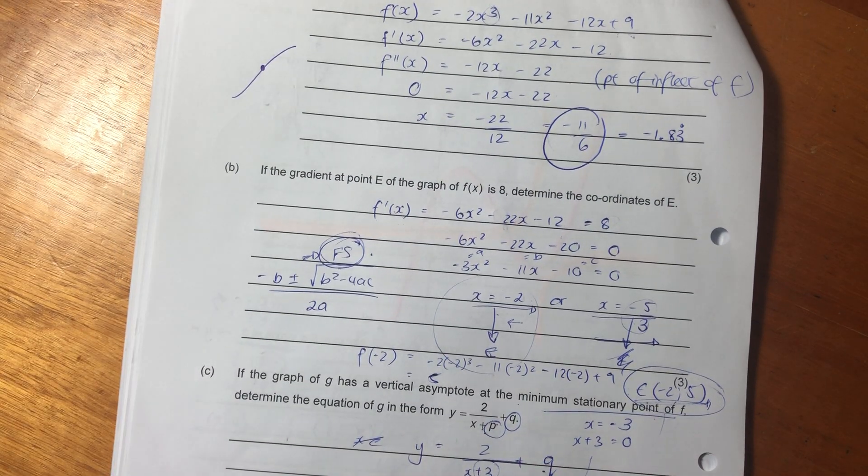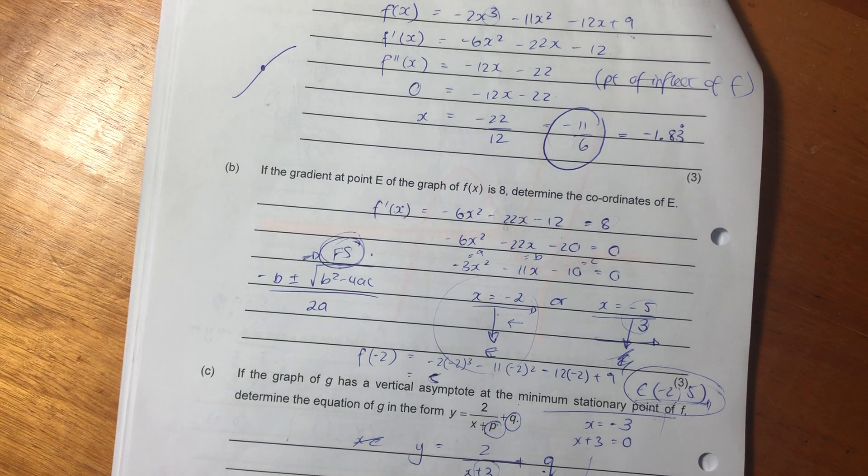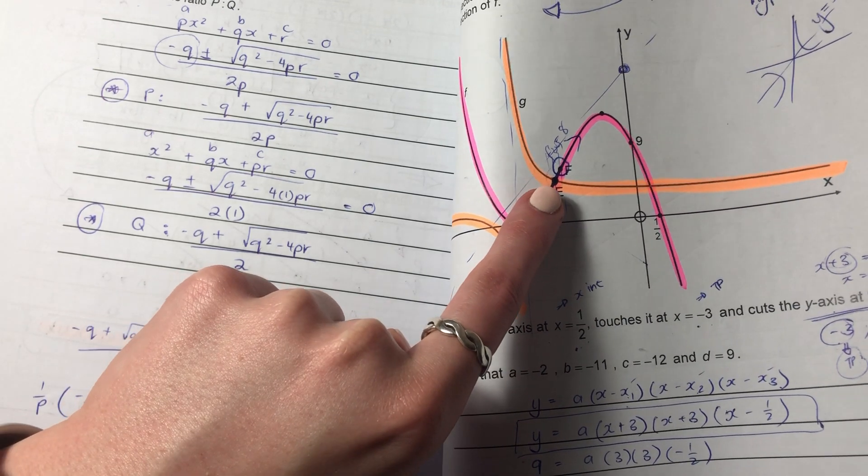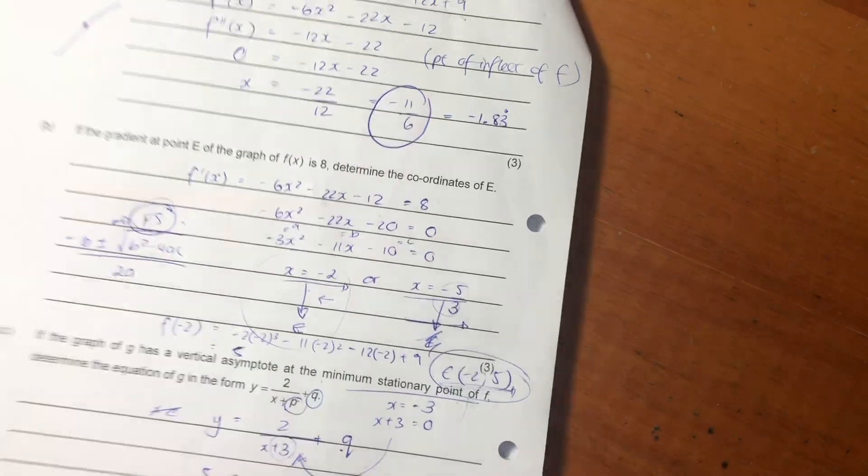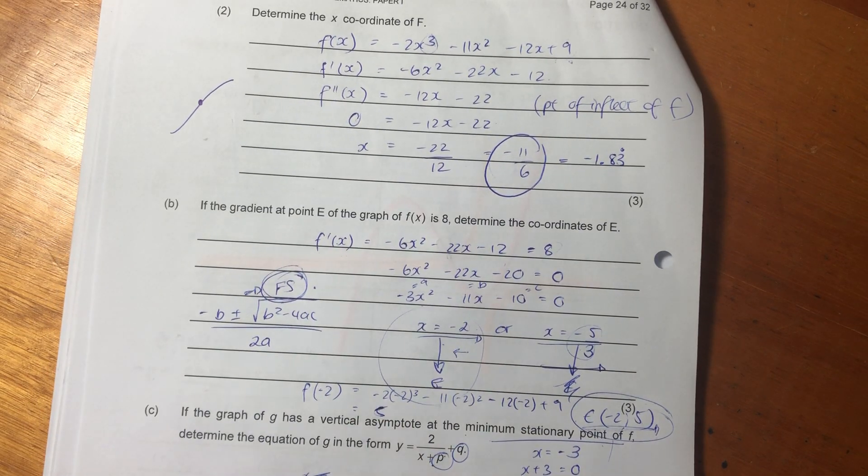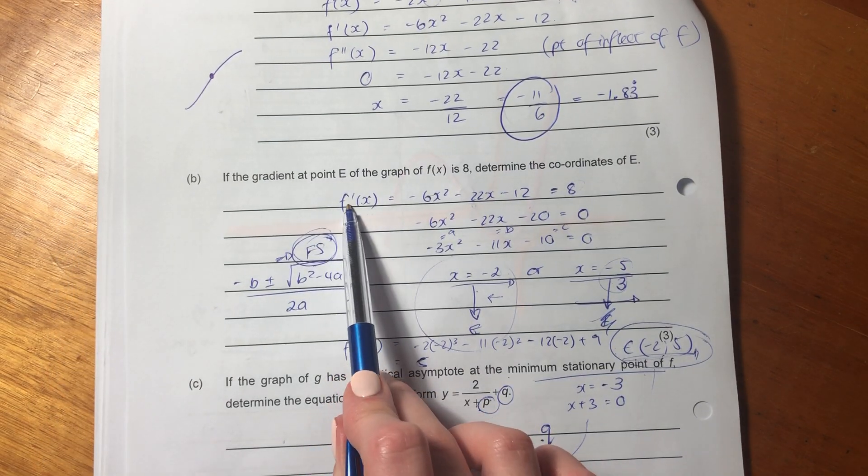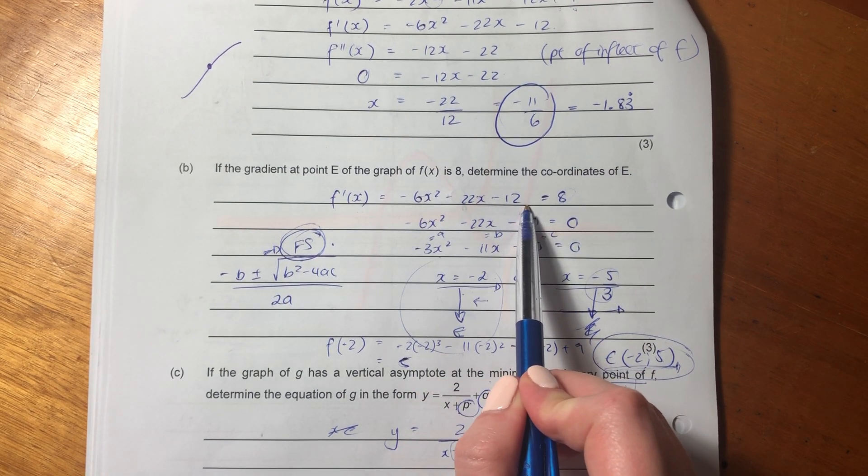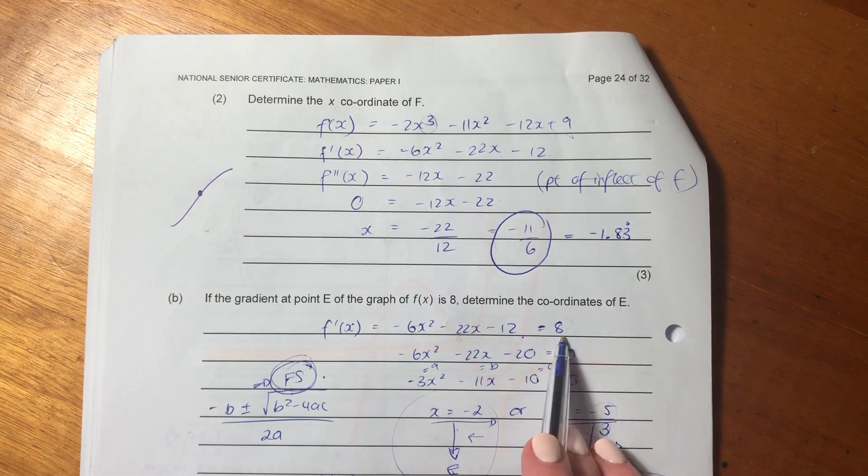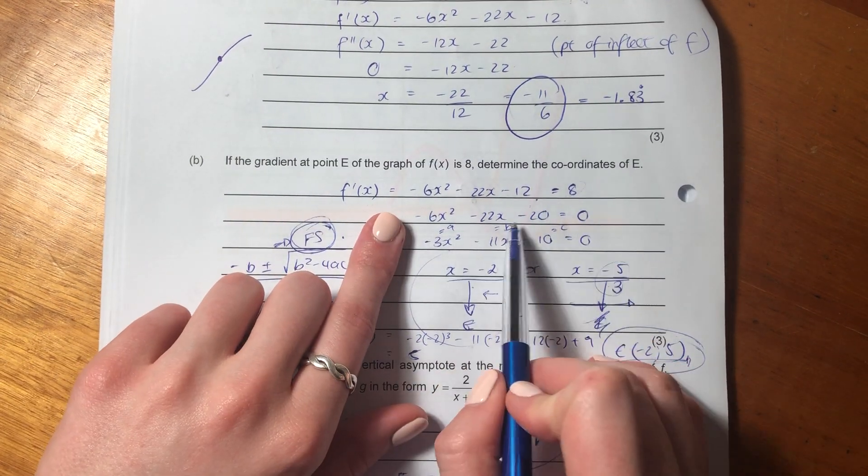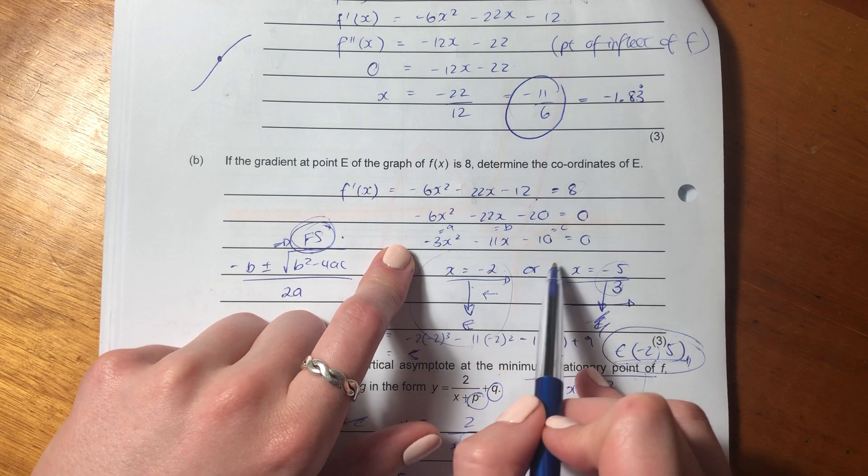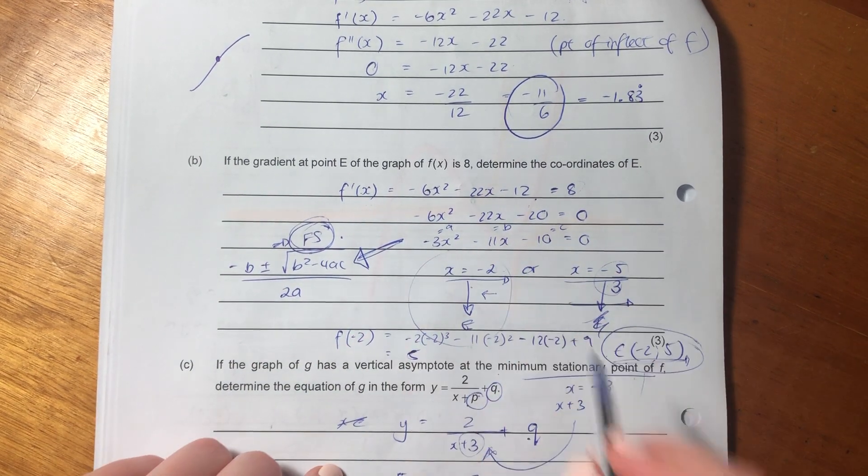Then it says if the gradient at point E of the graph of f(x) is 8, determine the coordinates of E. So what we're saying is we're saying the gradient at E, which is the point of intersection between these two graphs, it equals 8. Now what they're testing is whether you can remember that the first derivative equals the gradient. So I've said okay, the first derivative as calculated over here equals 8. Then I've brought the 8 over, divided through by 2 just to simplify it, and then I'm like oh there's a lot of stuff going on here. What am I going to use? My good old friend, the quadratic formula.